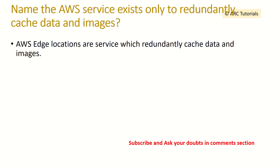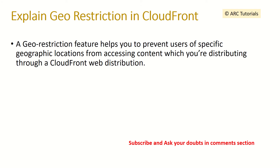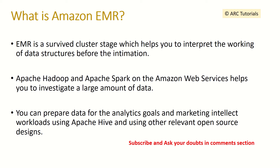Which AWS service exists only to redundantly cache data and images? AWS edge locations are services which redundantly cache data and images. Explain geo restrictions in CloudFront. A geo restriction helps you prevent users of a specific geographic location from accessing content distributed through a CloudFront web distribution, ensuring certain regions cannot access that data.